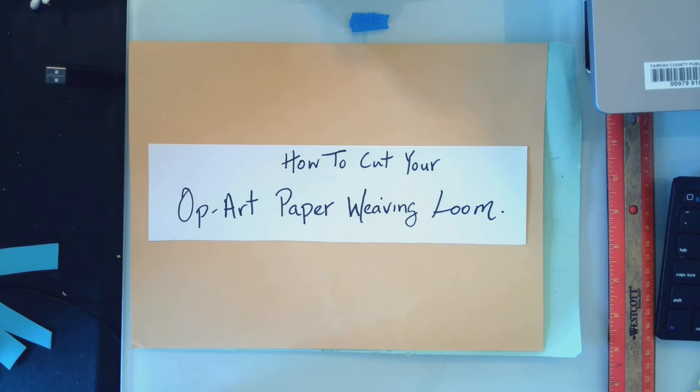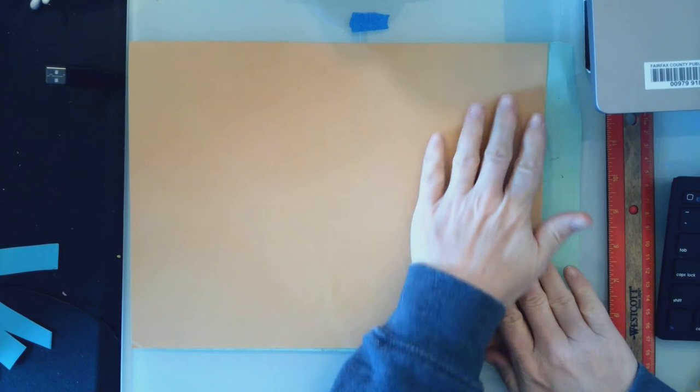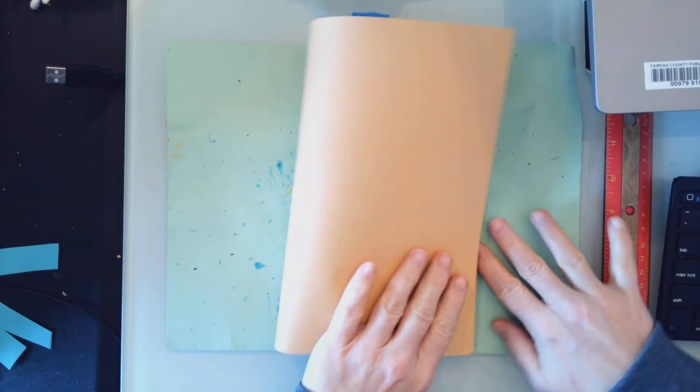Hello artists. I am going to give you directions on how to cut your op art paper weaving loom. You are going to start with your piece of construction paper and you are going to fold it with a hamburger.